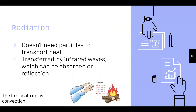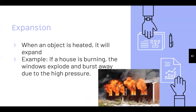Lastly, radiation doesn't need particles to transfer heat. The fire is transporting heat through the air to someone's hands — it's transferred by infrared waves, which can be either absorbed or reflected. You can see both convection and radiation in that same picture: the fire is heated by convection, and the radiation is traveling to someone's hands. If a house is burning, the windows can explode outward due to the high pressure.